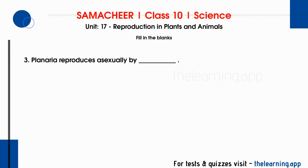Third question: Planaria reproduces asexually by DASH. The correct answer is Regeneration. Regeneration is a form of vegetative propagation where lost parts of an organism are regrown to form a new organism. An example is Planaria.